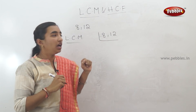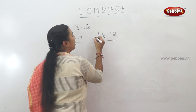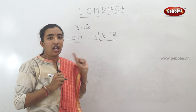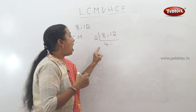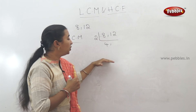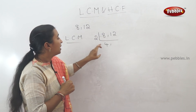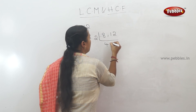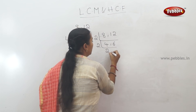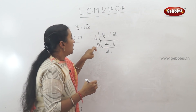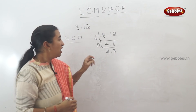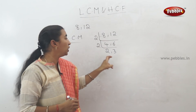First, we will find a common factor of the two numbers. Two goes into 8 — four twos are eight. Two goes into 12 — six twos are twelve. That gives us 4 and 6. Now, 4 and 6: the common factor is 2. Two into 4 is 8. Three into 3 is 9 — next, 3 into 2 is 6. So 3 equals 6.